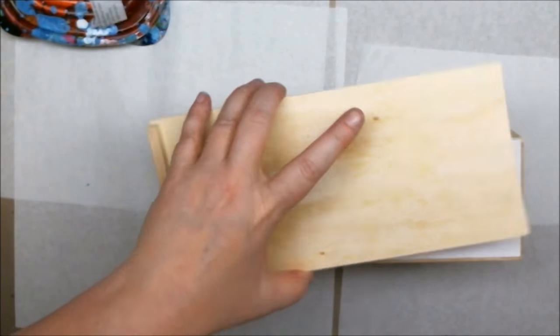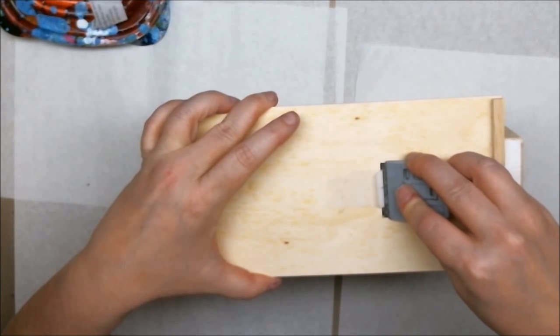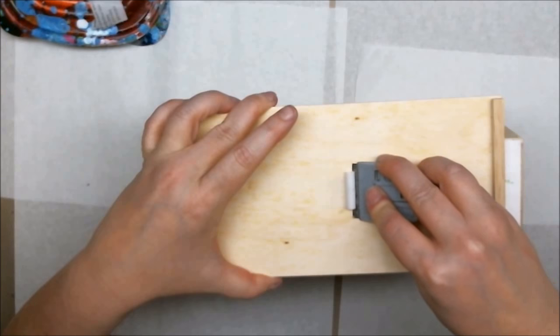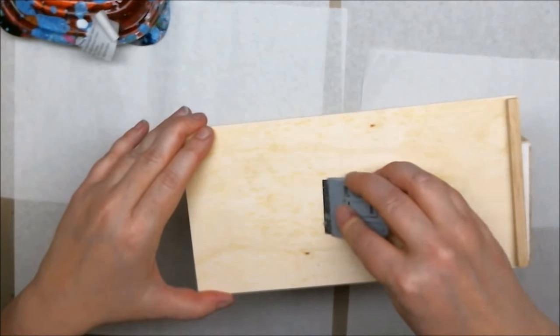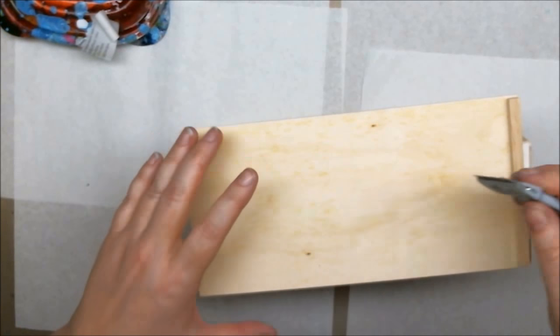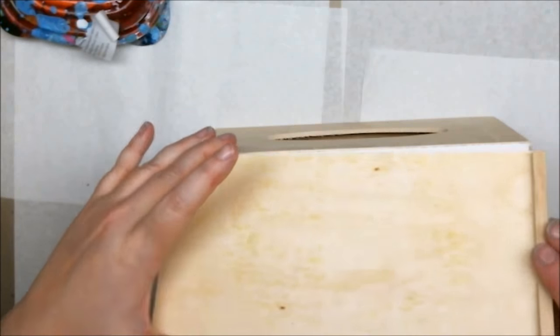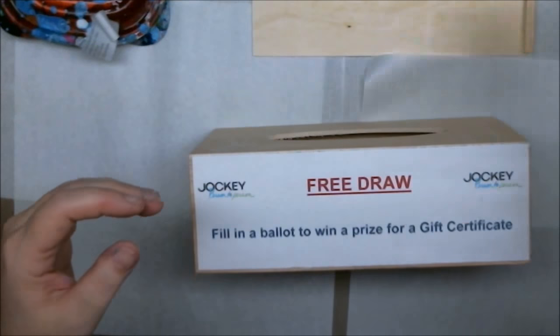It drives me nuts. Now the only thing is on plastic the lighter fluid just wipes off. On wood it probably absorbs a little bit. So you're going to want to let it just air out for a minute so that all of the volatile agents evaporate. But look at that. No more label. No more stickiness. Love it.